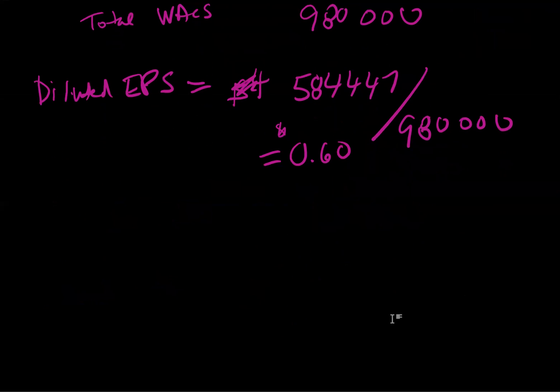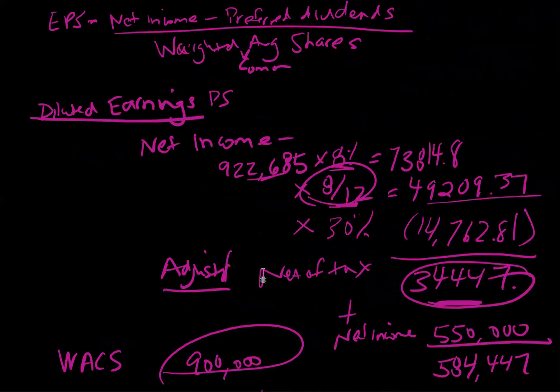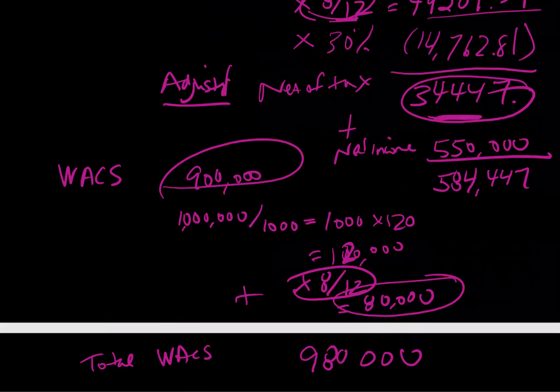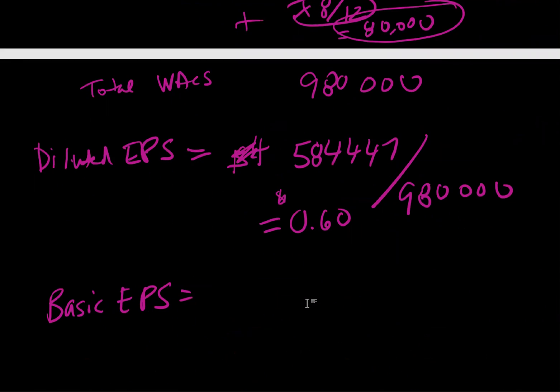What if the question asked us for our basic earnings per share? Well, our basic earnings per share would simply be the numbers that were given in the question, because we don't have any what-if scenarios. So we would have taken the net income at $550,000 and the 900,000 common shares outstanding. And we simply would have calculated $550,000 divided by 900,000, which would have given us $0.61 per share. So we can see that consistent with our expectation, the diluted earnings per share are lower.